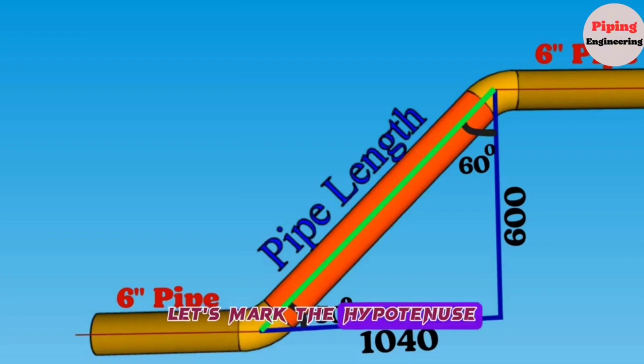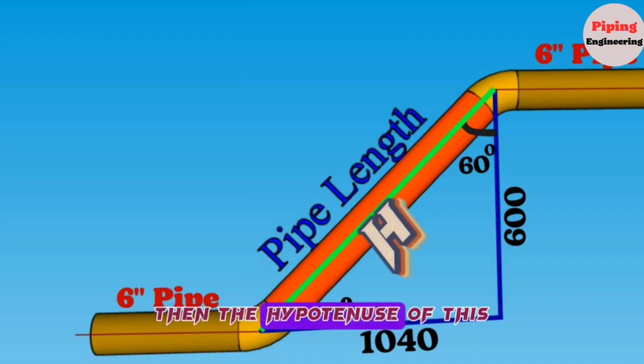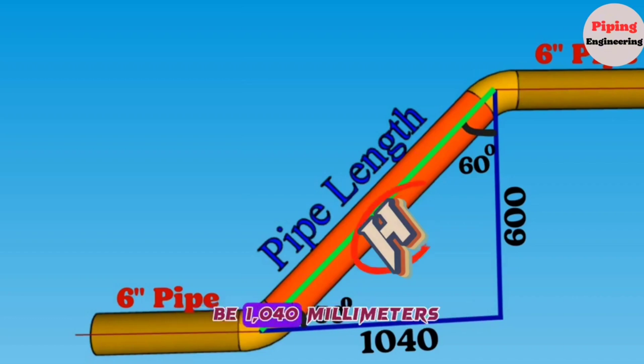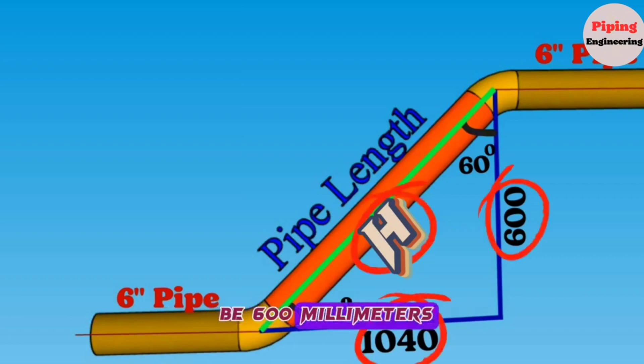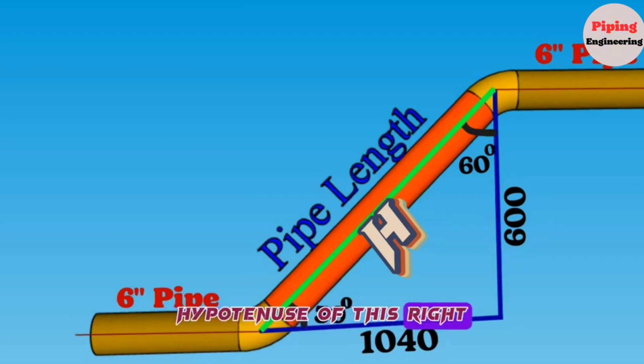Let's mark the hypotenuse of this right-angle triangle with H. Then the hypotenuse will be H, the base side will be 1040 millimeters, and the perpendicular side will be 600 millimeters. Let's find the length of the H hypotenuse of this right-angle triangle.